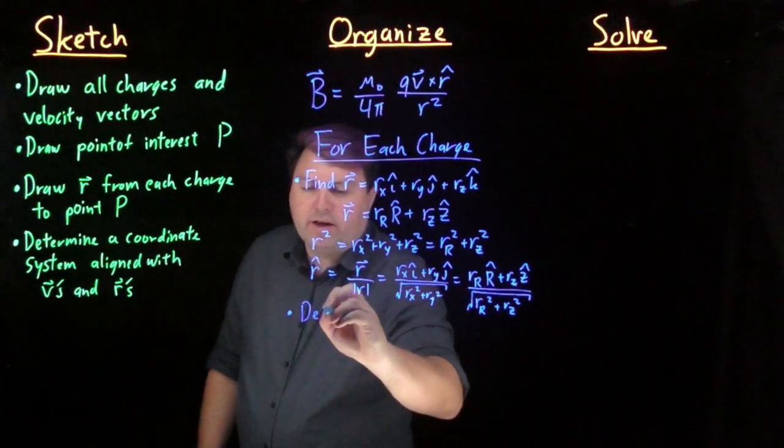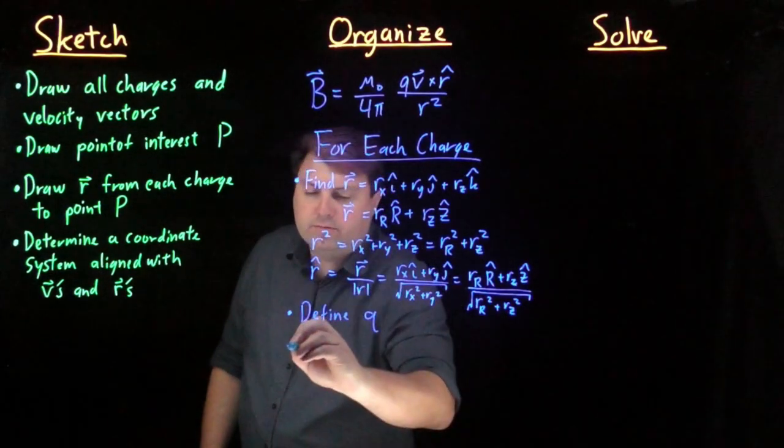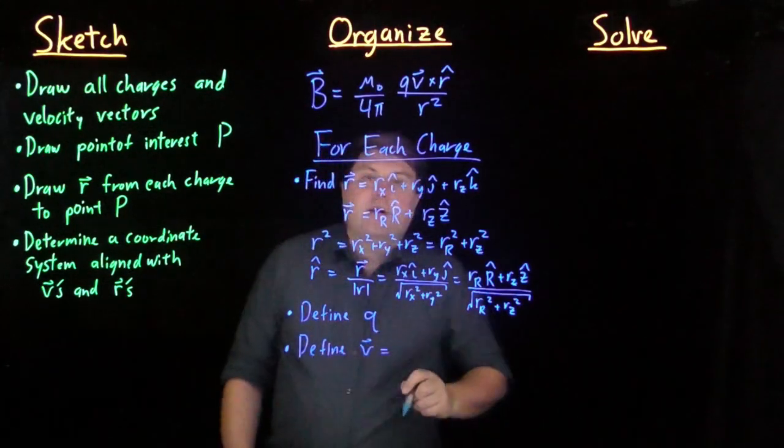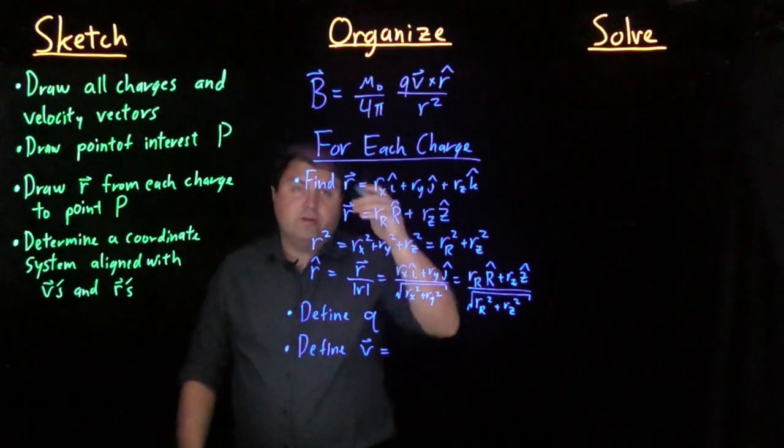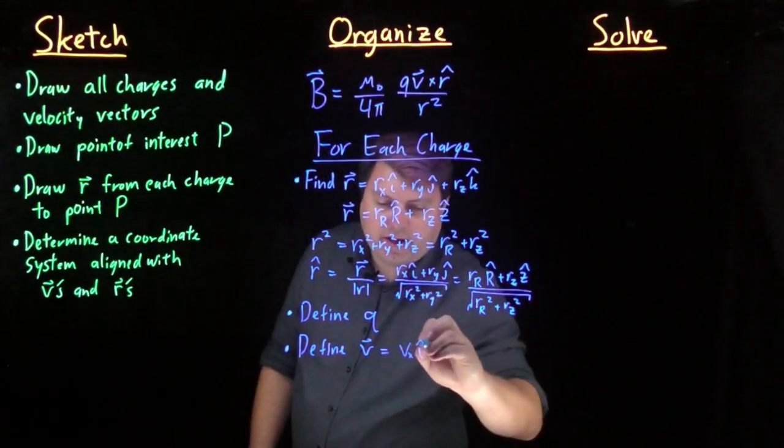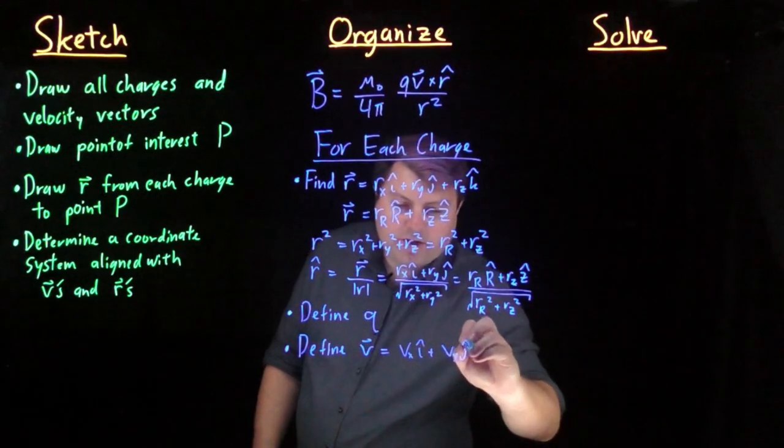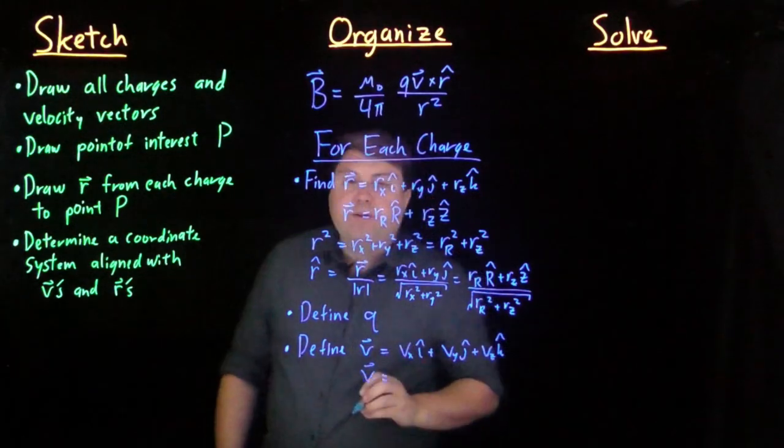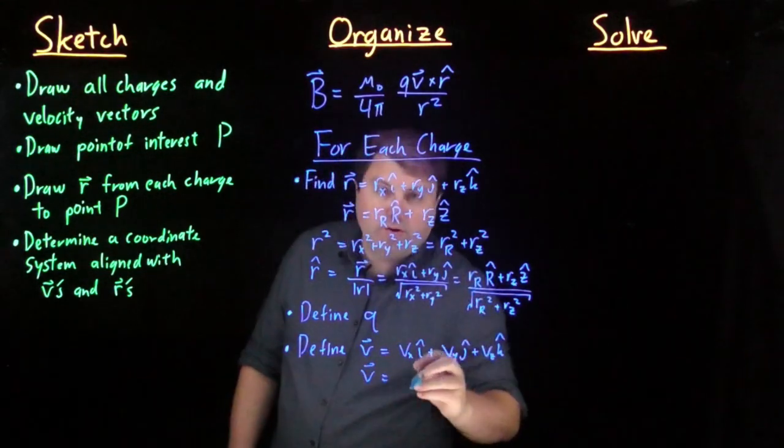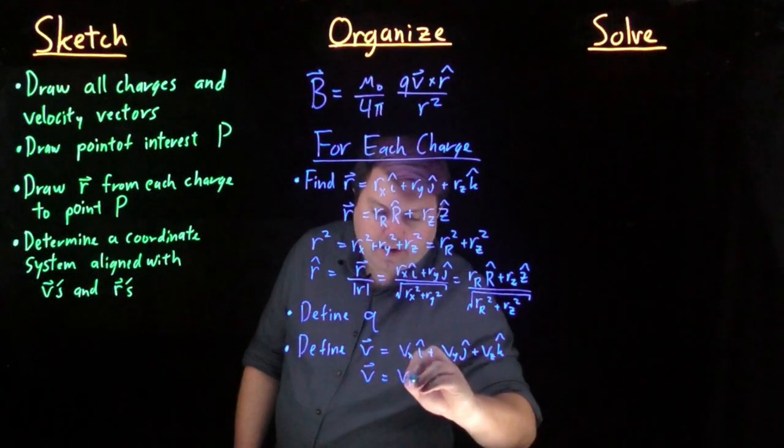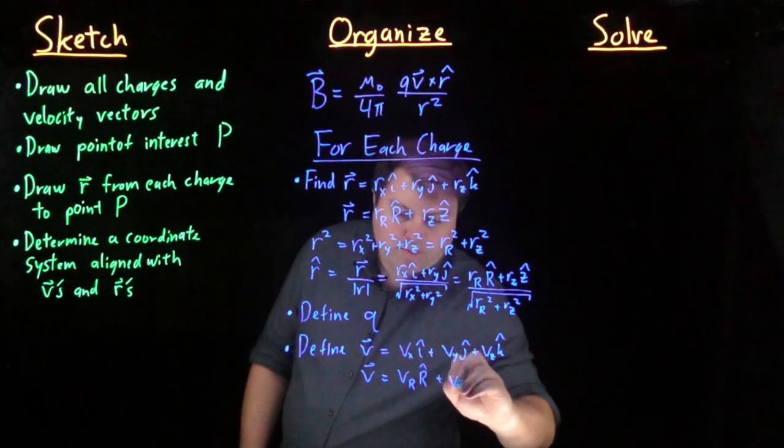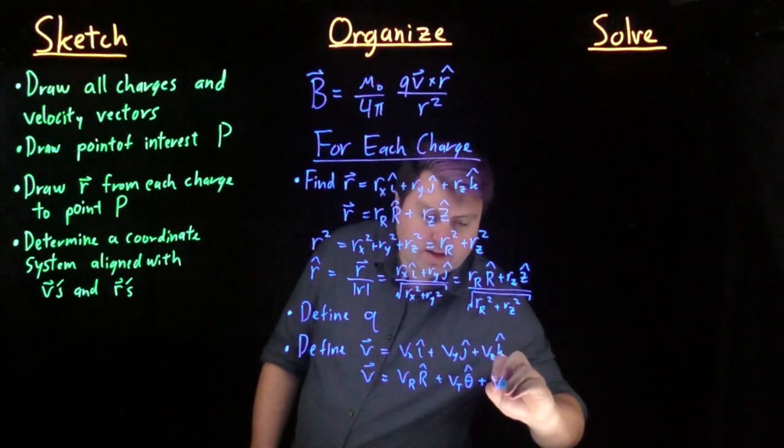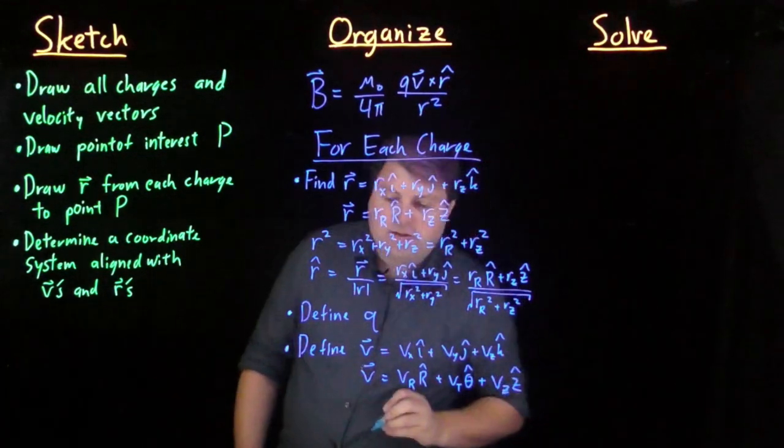And then we want to define q. And we also want to define v. And v could be in the x, y, and z direction: v_x i hat plus v_y j hat plus v_z k hat. But very often our v might be better represented in terms of polar coordinates. So we'd have v in the r direction r hat, plus v in the tangential theta hat or tangential hat, plus v in the z direction z hat.